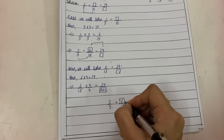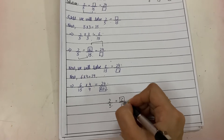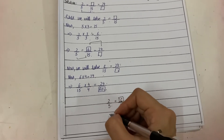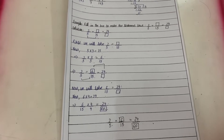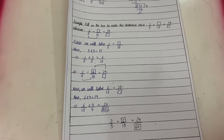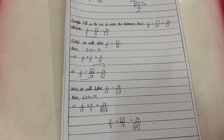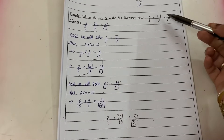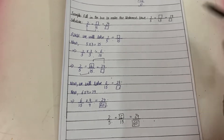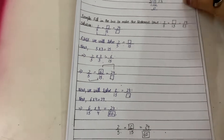We have found both box values. If you reduce 24 upon 60, you will get 2 upon 5 only. I hope you have understood how to find the value of the empty box.